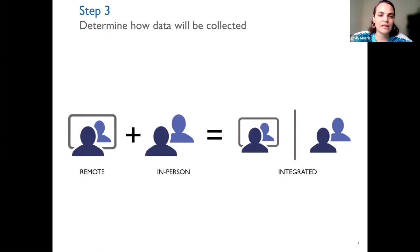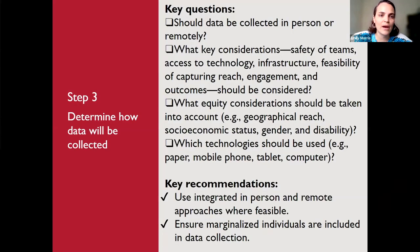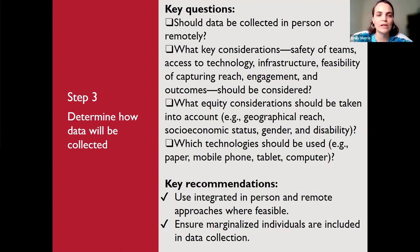The third step involves thinking about which measures will be remote and which will be in-person, ideally using a combination where feasible. Key questions include: what is feasible and safe for teams, what is the access to technology and infrastructure, what equity and geographical reach considerations apply, and which technologies will be used. The key recommendation is integrating in-person and remote data collection and ensuring marginalized individuals and groups are included.